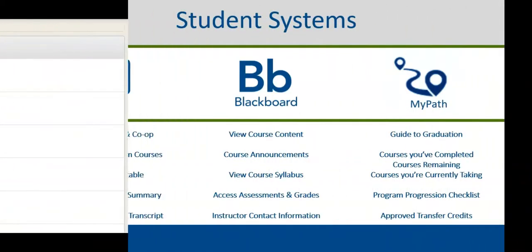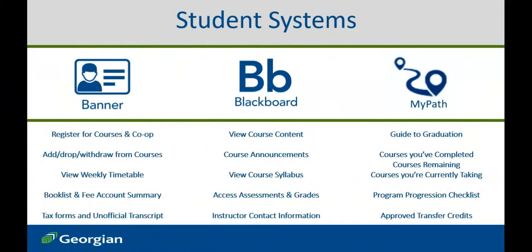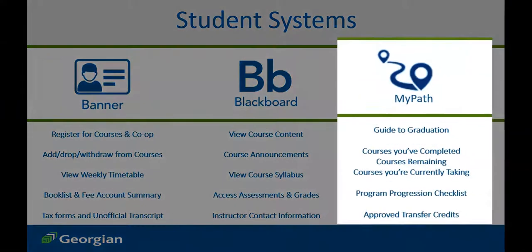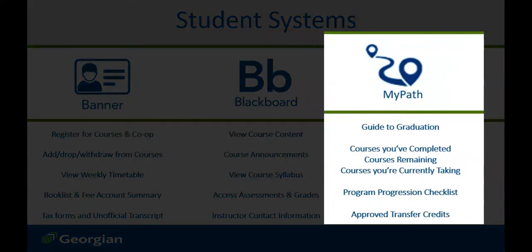Our third and final student system is MyPath, your academic planning tool. We can use MyPath to see your program requirements, courses you've completed, courses you have remaining, and courses you're currently taking. If you've applied for credit transfer, you can see your approved transfer courses from other institutions or previously completed Georgian courses.